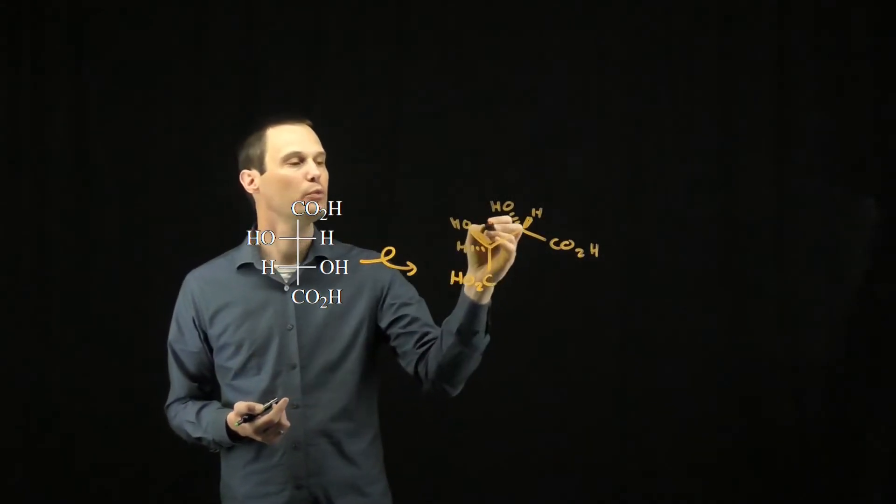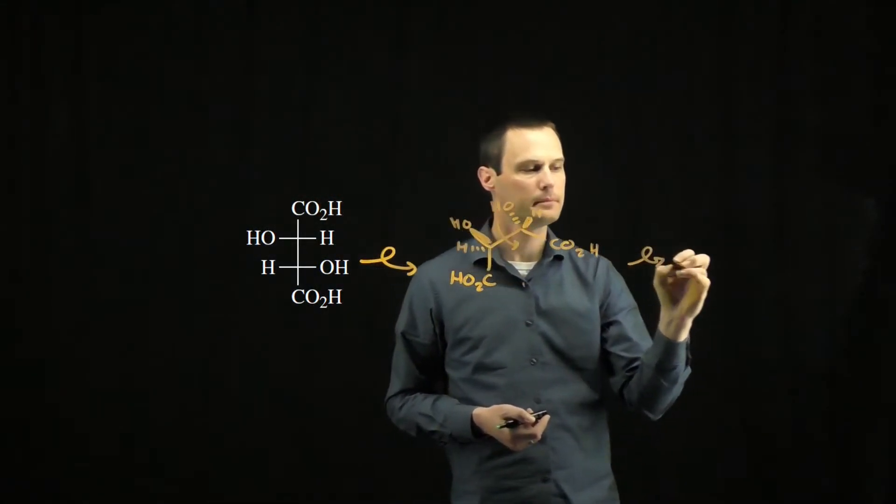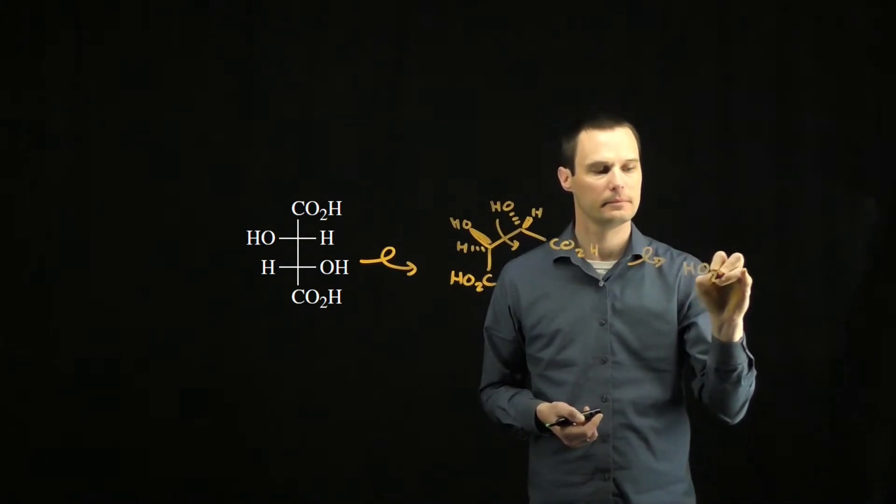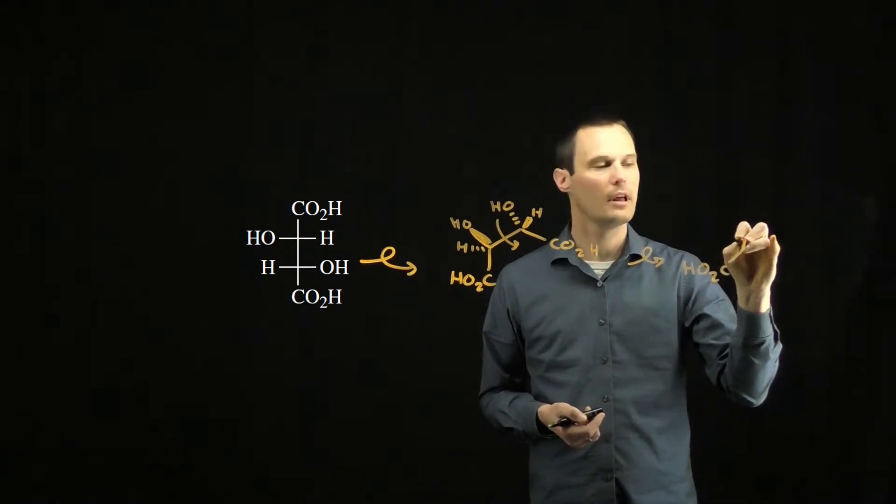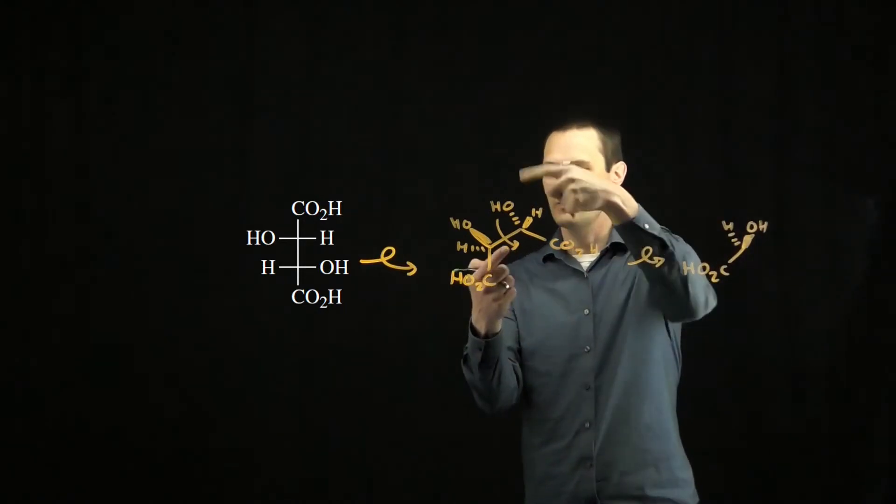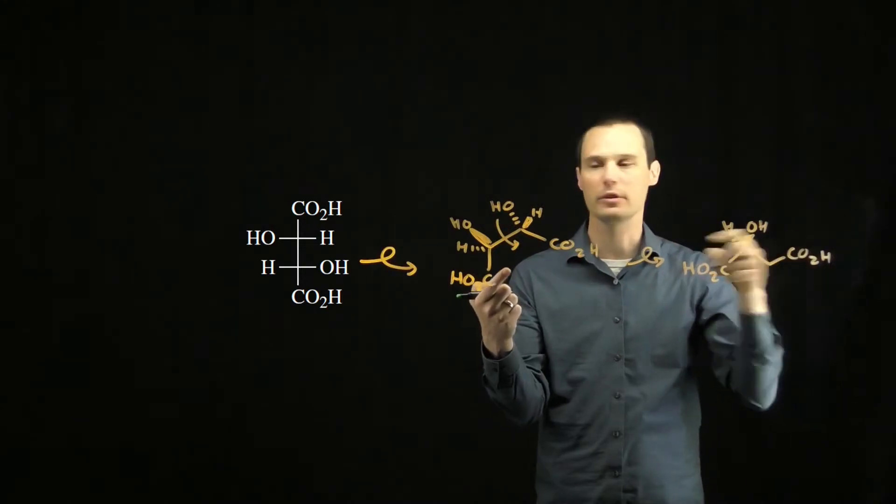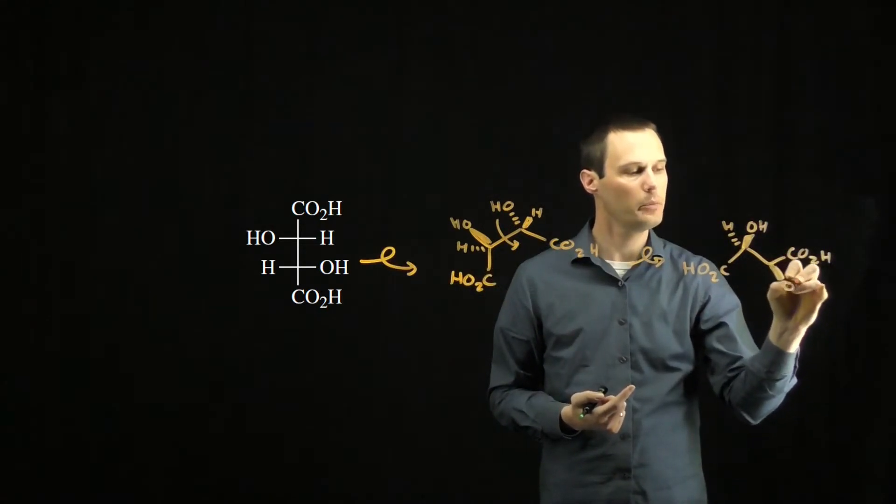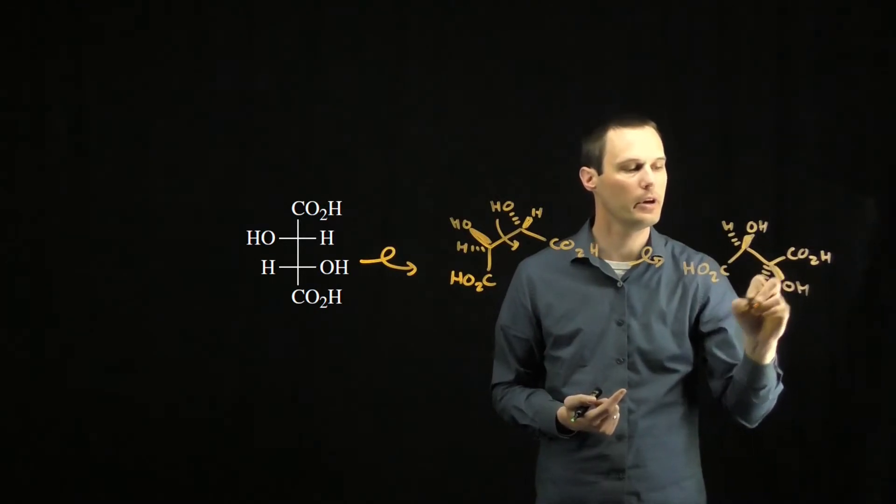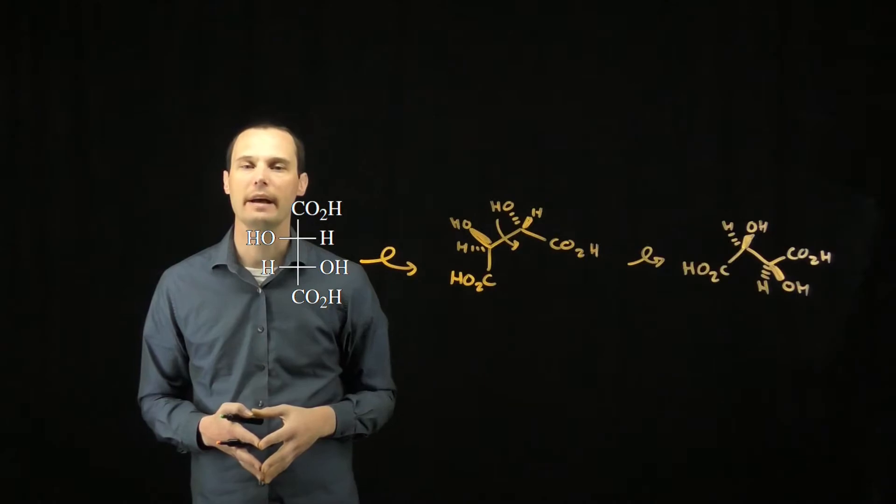Next, I'll just need to rotate around this carbon-carbon bond in order to put it in its zigzag form. That will keep this oxygen on a wedge and this one on a dash. When I rotate here, that's going to flip the wedge-dash notation for the oxygen and the hydrogen. The oxygen now will be on a wedge and the hydrogen will be on a dash for this carbon. This is how we convert this Fischer projection into the line angle structure.